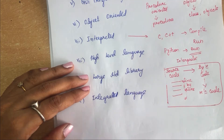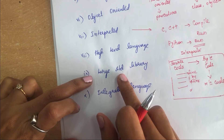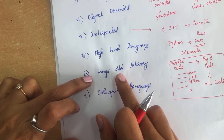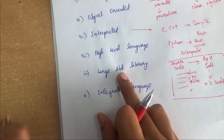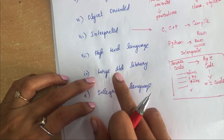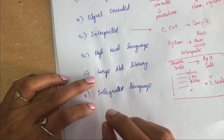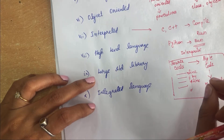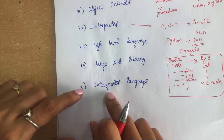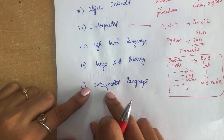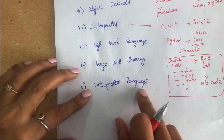Python supports a large standard library. It has a wide range of library routines that allow you to write programs for anything from simple text processing to complex games. You need not write code for every single thing since all the routines are available inside Python. The last feature is that Python is an integrated language — you can easily integrate Python with other languages like C and C++.